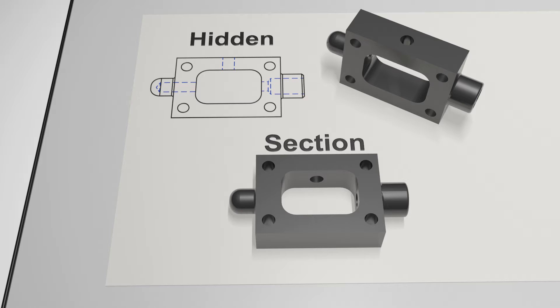To create a section view you actually need a projected view beside it as a reference. A cutting plane is then marked through this adjacent view showing the location of the cut through the object and the direction of viewing, which can be found from the arrows leading off of the cutting plane itself.